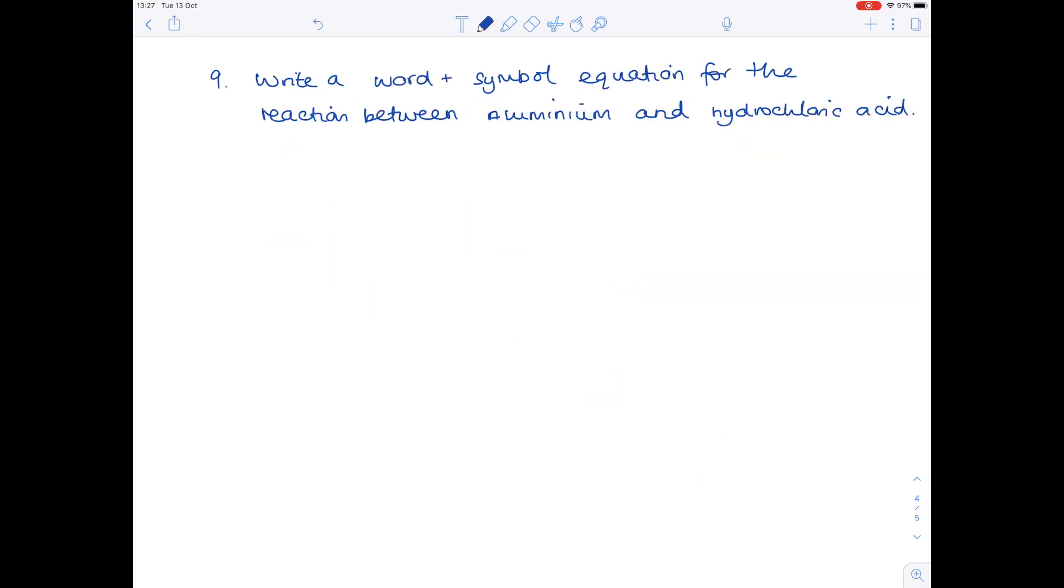Write a word and symbol equation for the reaction between aluminium and hydrochloric acid. It makes the salt aluminium chloride and hydrogen as a by-product. Al. Learn the formula of hydrochloric acid, it's HCl. Forms AlCl3. Remember that hydrogen is diatomic. Now double check to see if it's balanced. It's not.